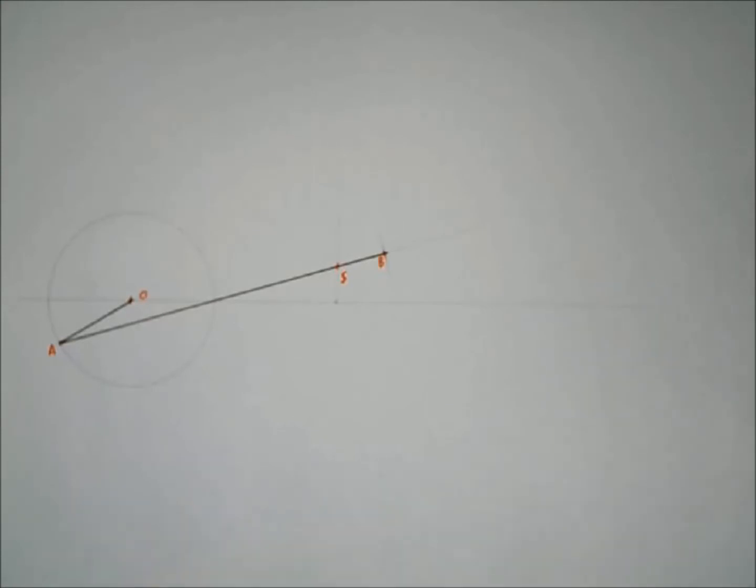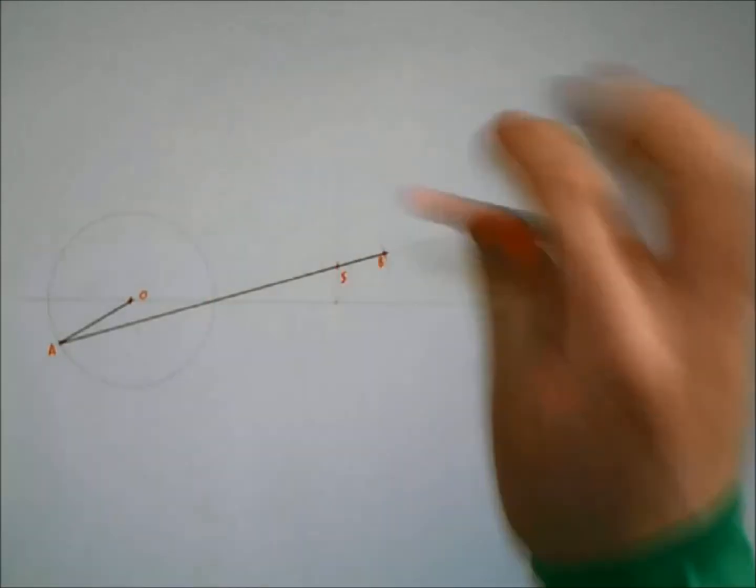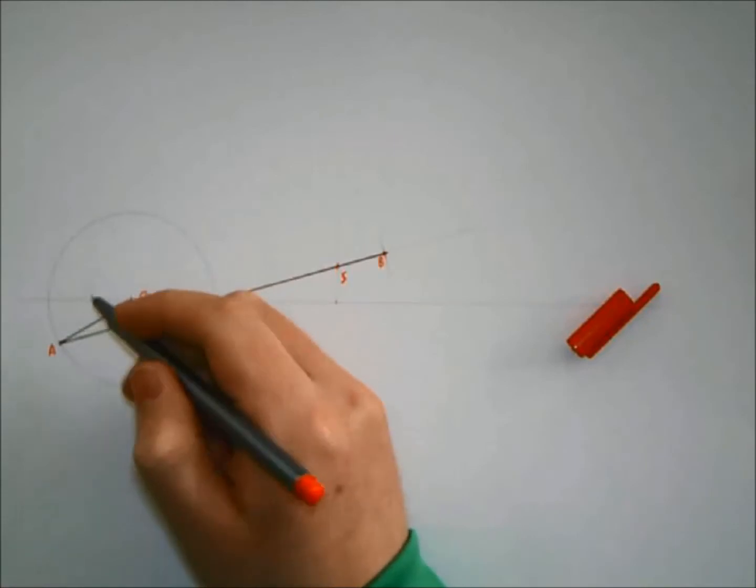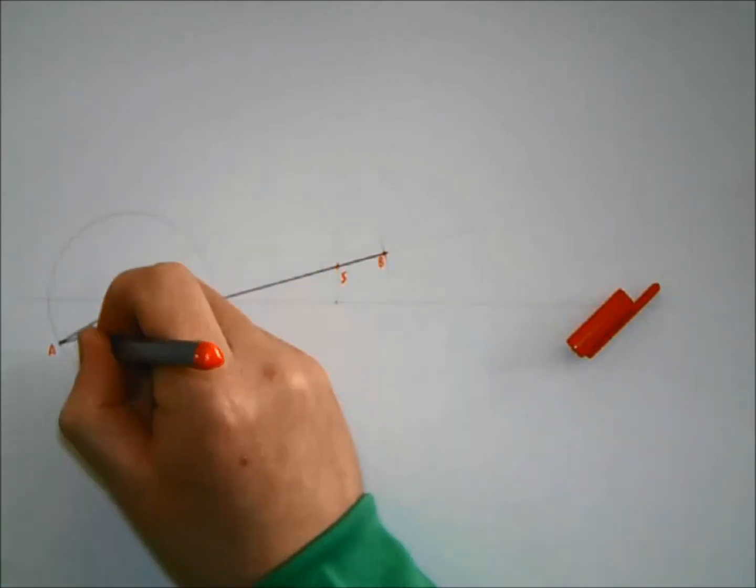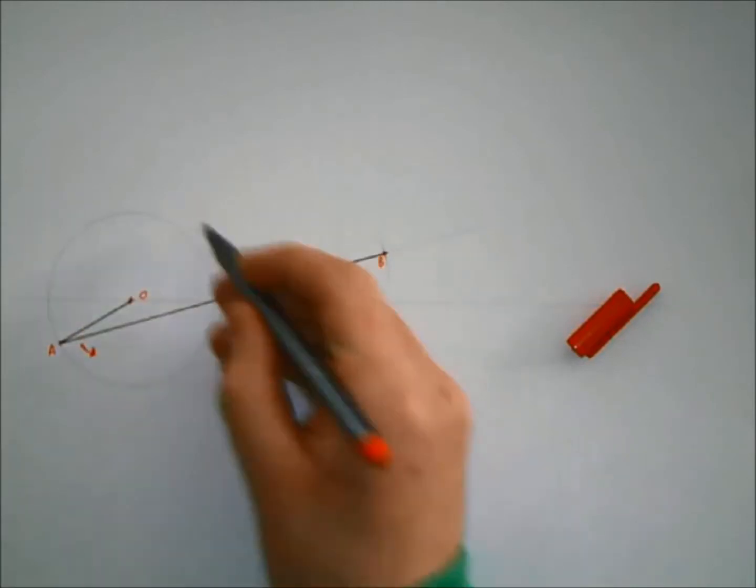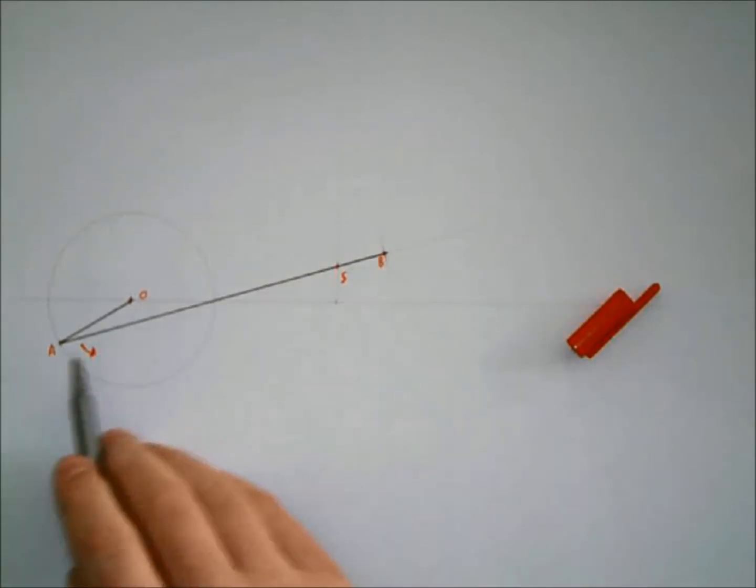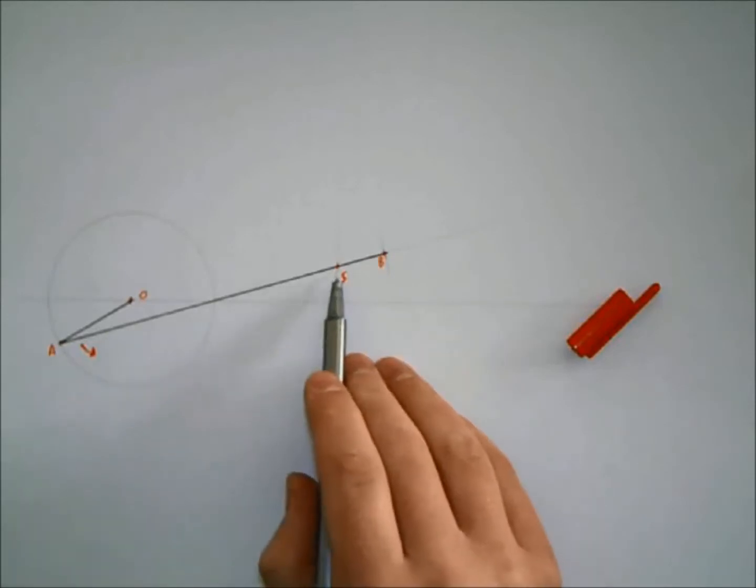OA is your crank, so OA is rotating anti-clockwise in this direction, rotating about O. AB remains that length all the time—AB is always going to be 140mm—and AB will always have to go through point S. S is a pin joint there, so it is stationary.